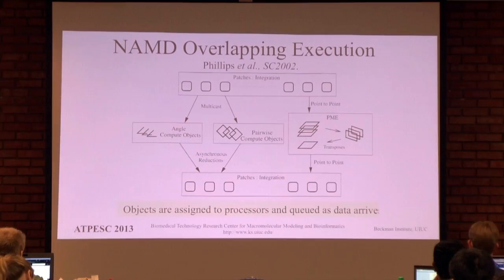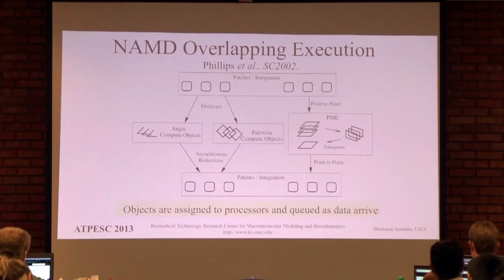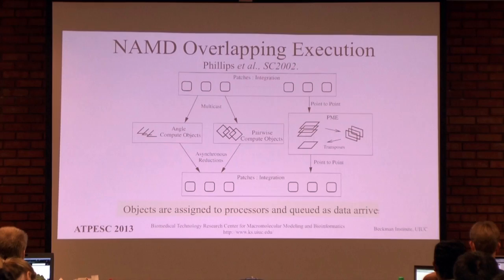The compute objects, when they receive the data they need or when that data becomes available on a given node, enqueue themselves, execute, and we get wonderful overlapping. From our Gordon Bell Award-winning 2002 paper: we have spatial decomposition and work decomposition broken up — covalent bonded terms, non-bonded terms (Lennard-Jones and electrostatics), and long-range electrostatics parallelized using particle mesh Ewald, a fast-Fourier-transform-based method. The primary communication is a big transpose, and the nice thing about message-driven execution is that the latency-sensitive PME transpose can be hidden behind the larger amount of work in the non-bonded calculation.